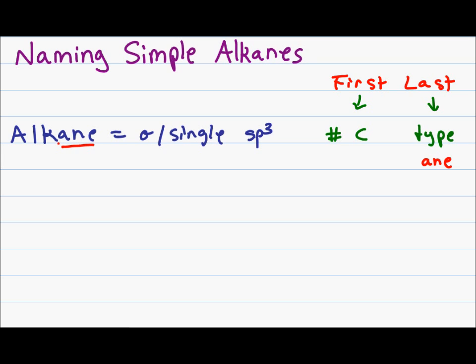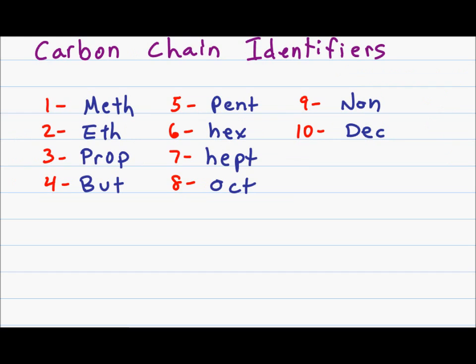For the first name, we will use specific words that identify the number of carbons in the parent chain. The words that identify carbon lengths of one through ten carbons are very important and you must memorize them for the average organic course. The words for eleven through twenty carbons are not as important to memorize as not every professor requires you to know them.